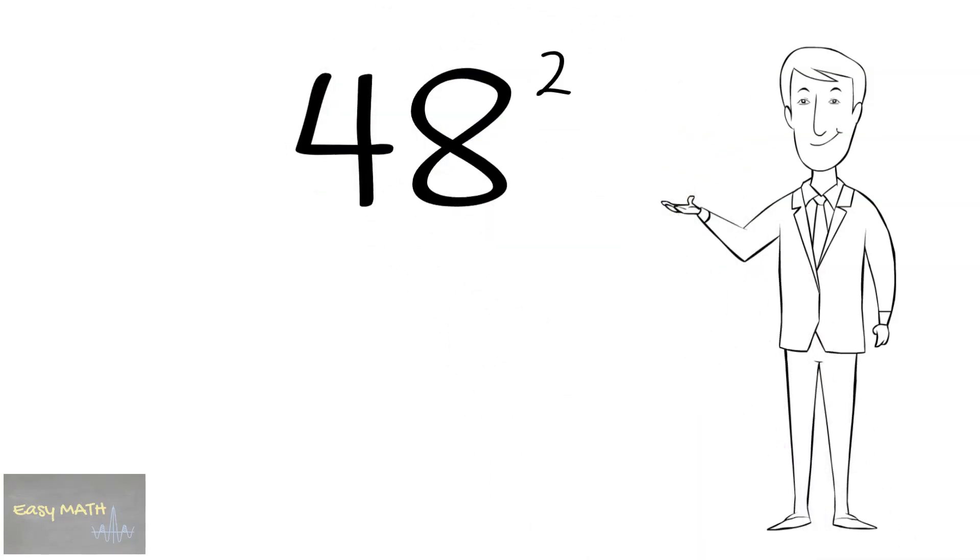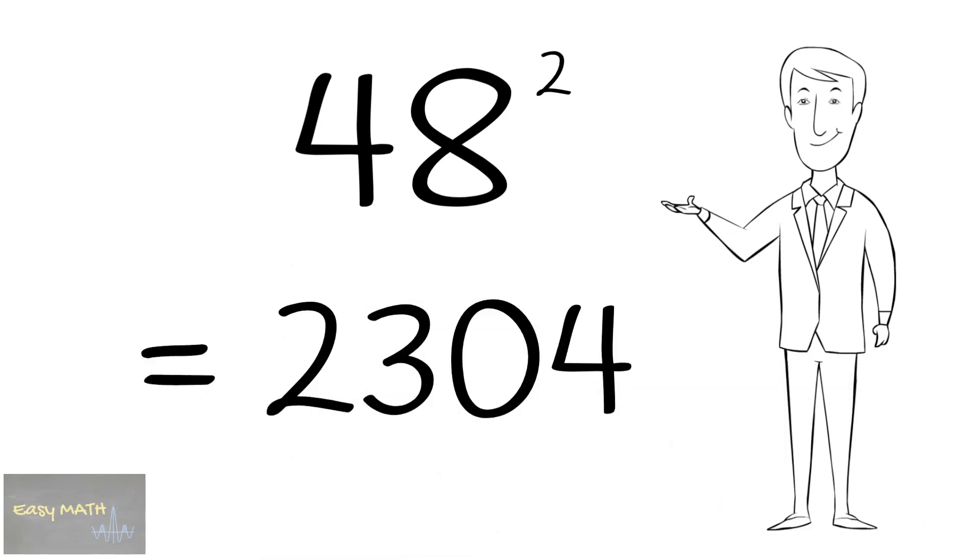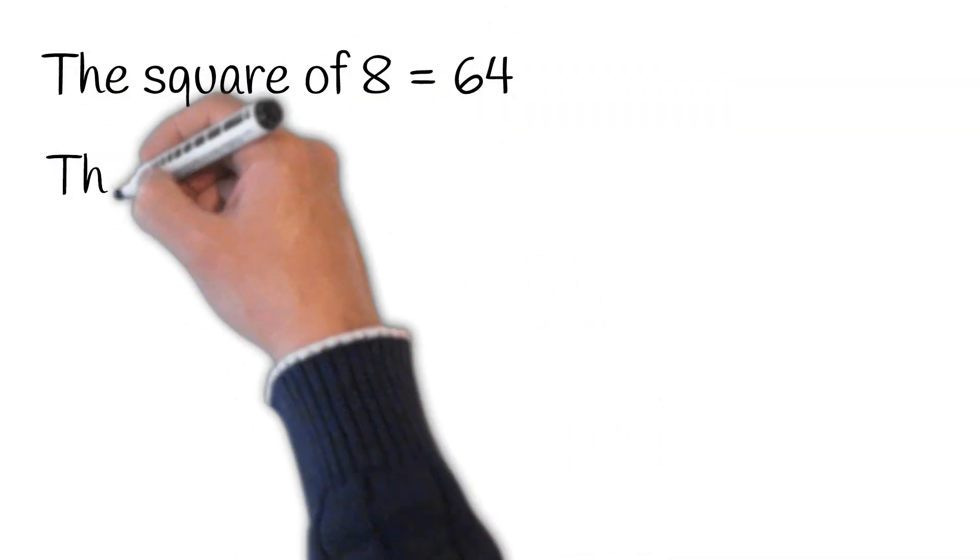Can you get the square of 48 in 5 seconds? Let's try. Your time is up. The square of 48 is 2304. Do you want to know how? Here's the trick. Get the square of 8 which is 64 and the square of 4 which is 16.